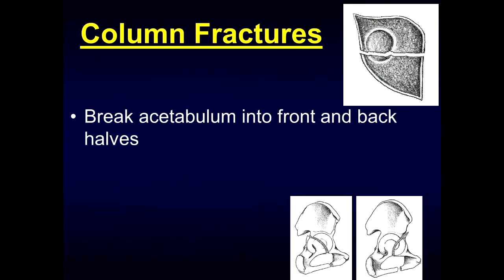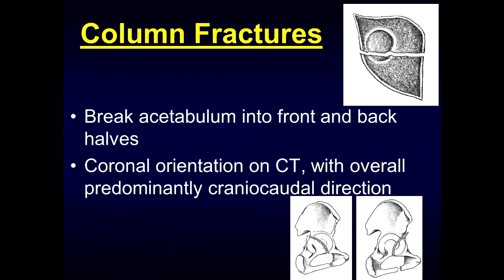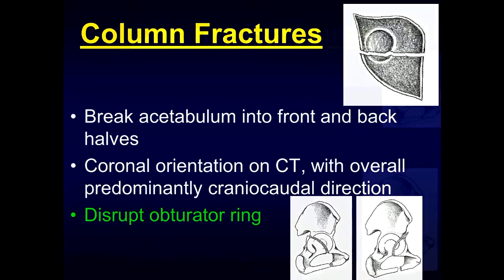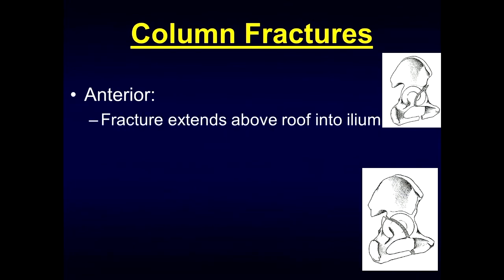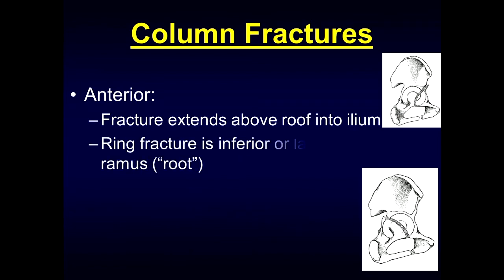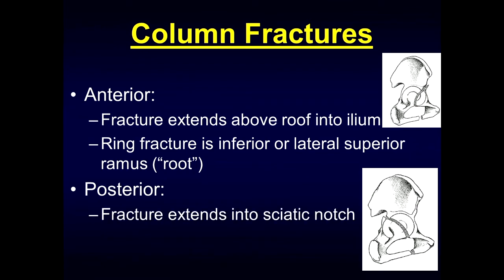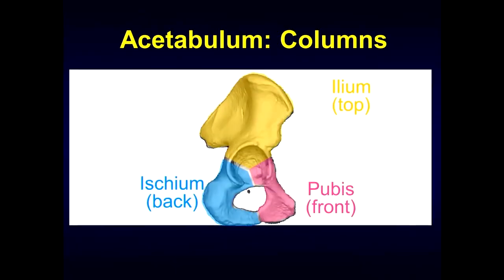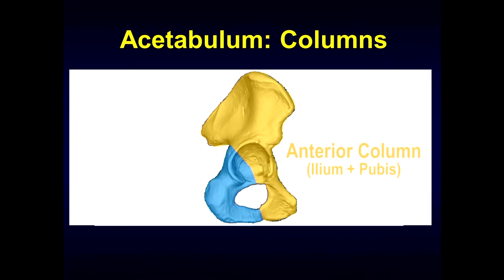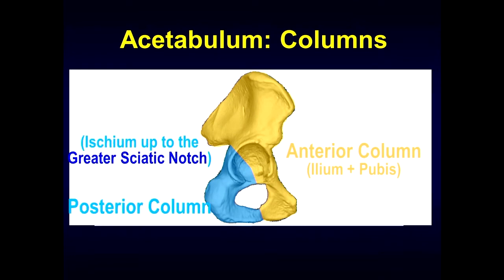Column fractures involve a break of the acetabulum into front and back halves, with a coronal orientation on CT with predominantly cranial-caudal dimension, and they get disruption of the obturator ring. With anterior column fractures, the fracture extends above the roof into the ilium and the ring fracture is located inferior or involving the lateral superior ramus, also called the pubic root. With posterior column fractures, the fractures extend into the sciatic notch and the ring fracture is typically within the inferior ramus. The anterior column consists of the ilium and pubis; the posterior column extends up to the level of the greater sciatic notch.